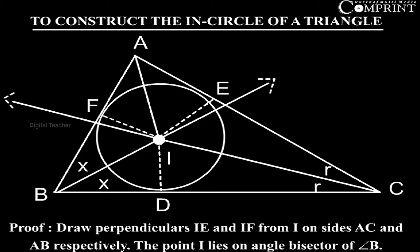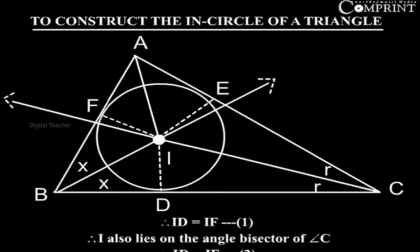Proof: draw perpendicular IE and IF from I on sides AC and AB respectively. The point I lies on angle bisector of angle B. Therefore, ID equal to IF, equation 1.